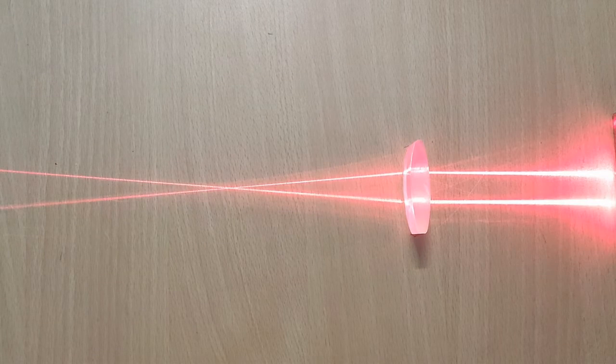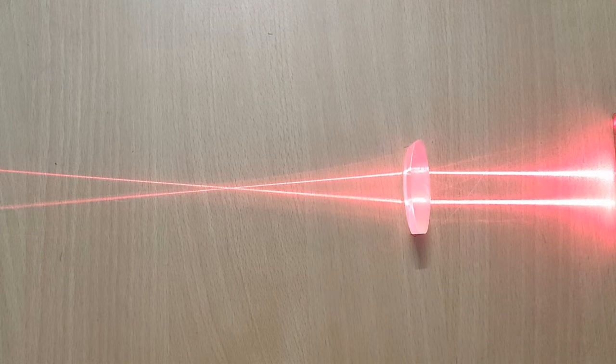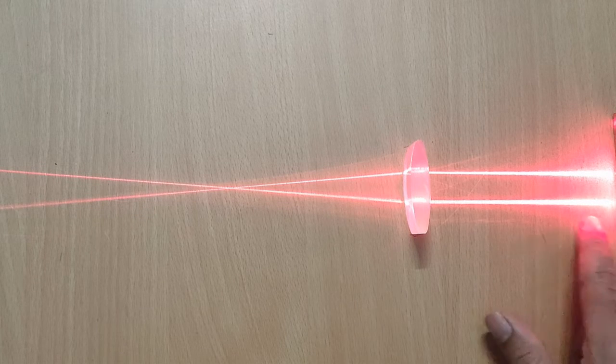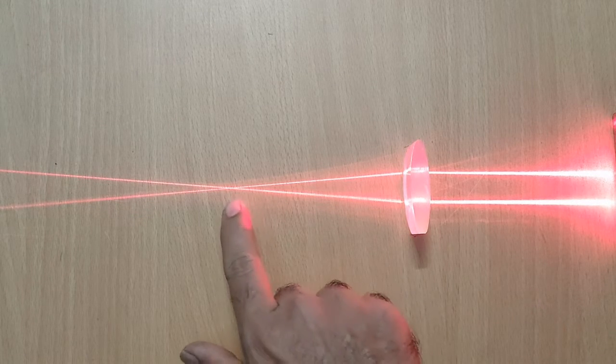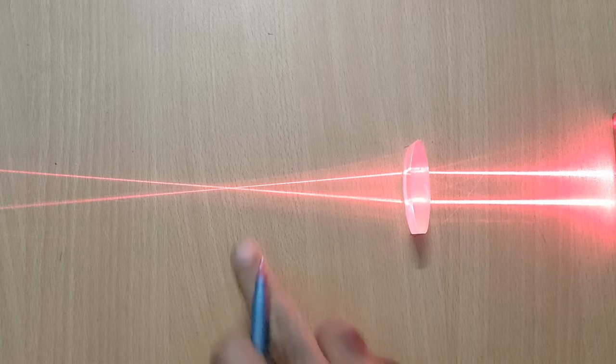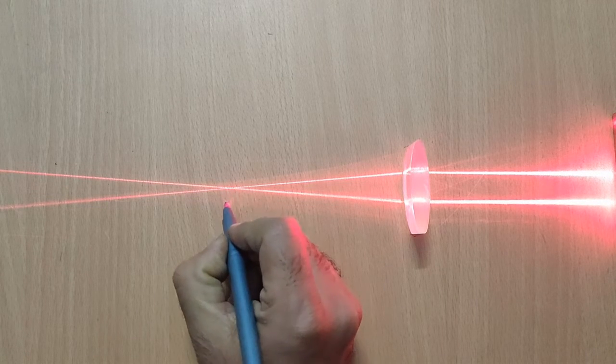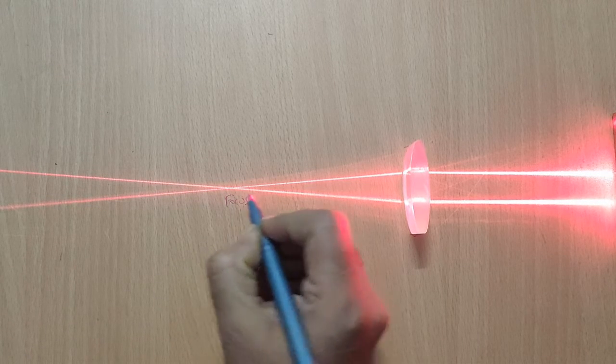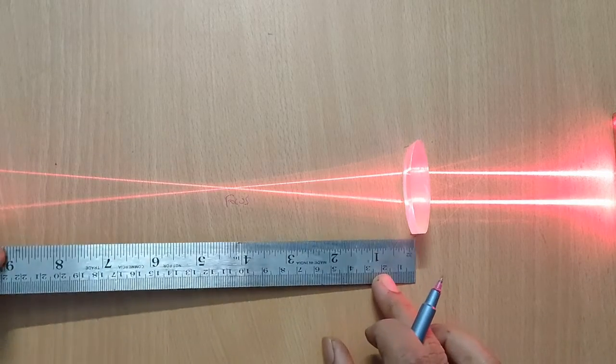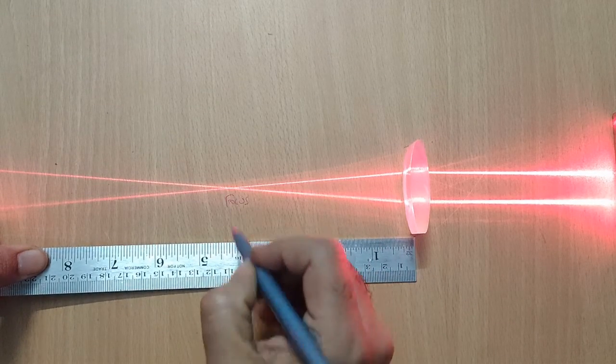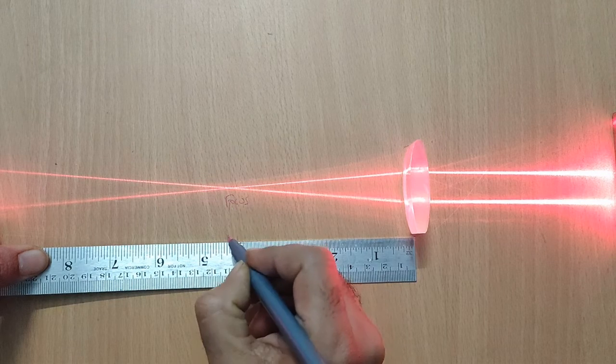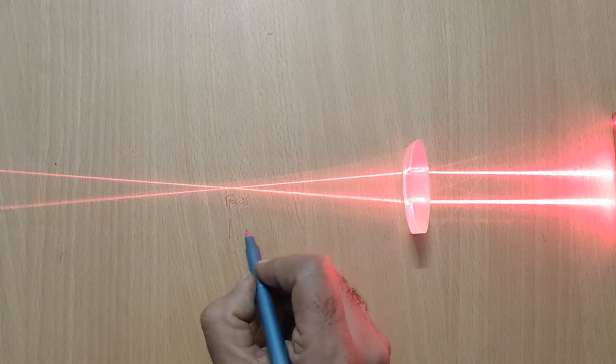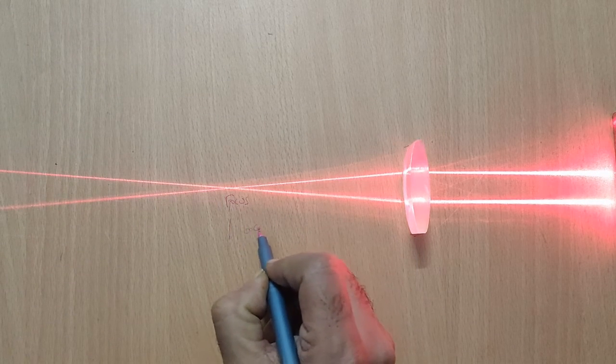Now direct parallel laser beams onto the lens. The laser light rays after falling on the lens converge to meet at one point. This point is called focus and distance from the focus to the lens is called focal length. Here focal length of the lens is 11 cm.